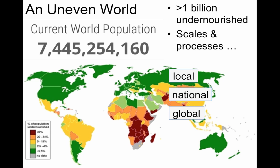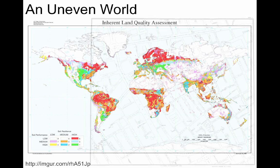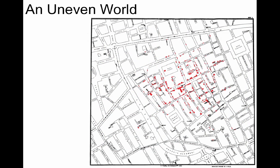Just as people are not evenly distributed, neither is the arability or the productivity of farmland across the globe. This map shows the global distribution of arable land through a myriad of colors, and as you can see, not all arable land is created equal. Moving away from the world of malnutrition, we can look at the equally disheartening world of disease to better understand uneven spatial distribution.